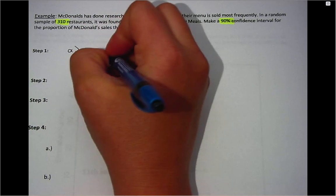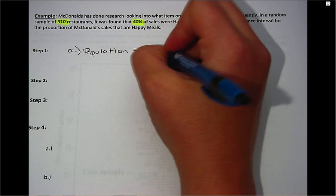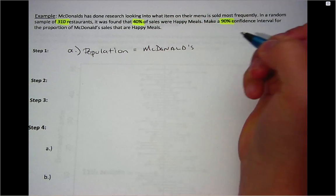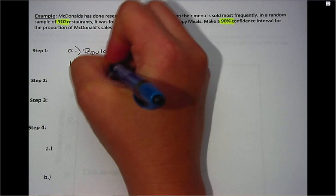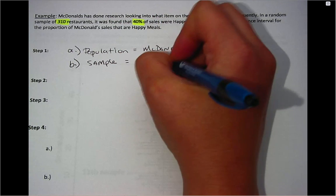So the first thing we want to do is identify the population. The population here is McDonald's sales and then the sample is going to be the 310 restaurants.